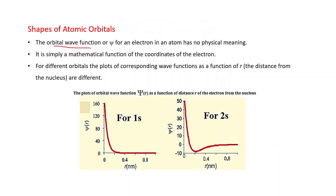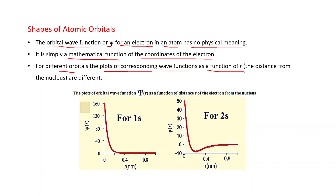The orbital wave function psi for an electron in an atom has no physical meaning — it is simply a mathematical function of the coordinates of the electron. For different orbitals, the plots of corresponding wave functions as a function of r, where r is the distance from the nucleus, are different. These are the plots of orbital wave function psi(r) for 1s and 2s.